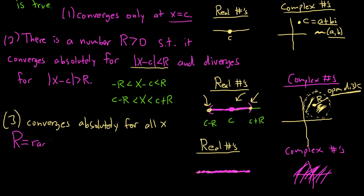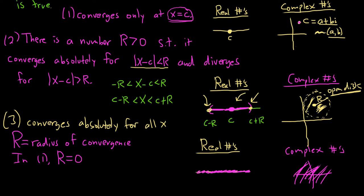R is called the radius of convergence, and now you see why it's an actual radius — it's the actual radius of a circle if you consider a series in the complex plane. In the first condition, it converges only at c, so the radius would be zero — it's like a circle with no radius. In the third case, the radius is infinity — the circle blows up and takes over the whole complex plane or the whole real line.